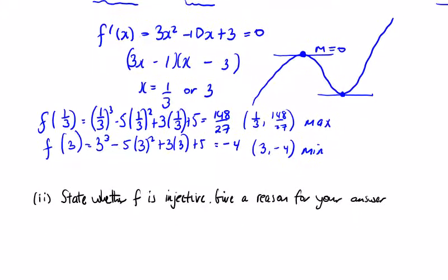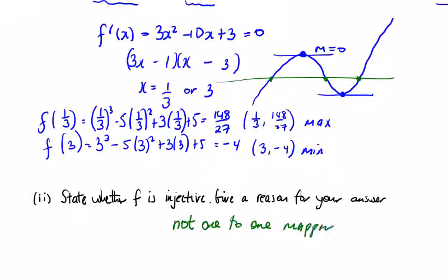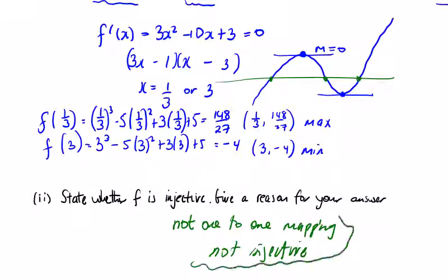The last part asks whether f is injective. The easy way to check: draw a horizontal line. If it passes through the function more than once, it's not injective — it's not a one-to-one mapping as required for an injective function, unlike a linear equation. So f is not injective. Have fun practising all these exam questions — practice makes perfect.